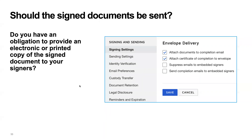You should also think about whether the signed document should be sent to the signer, because the default is that they won't receive it from DocuSign. If you have an obligation to provide an electronic or printed copy — something you have to discuss with your business team — we can do it, or you can do it through your own application. We can only send completion emails if you gave us the email address.